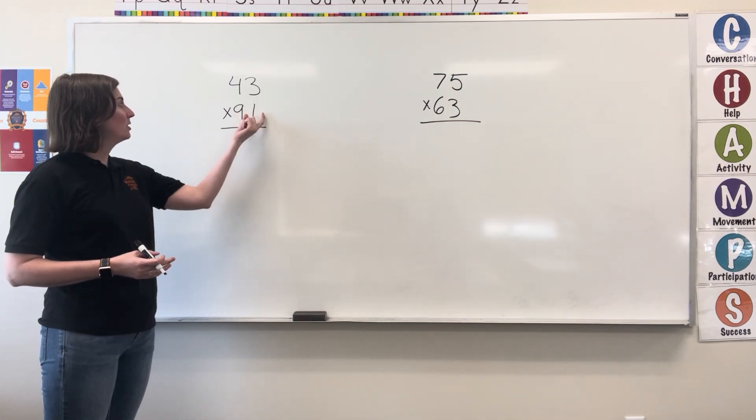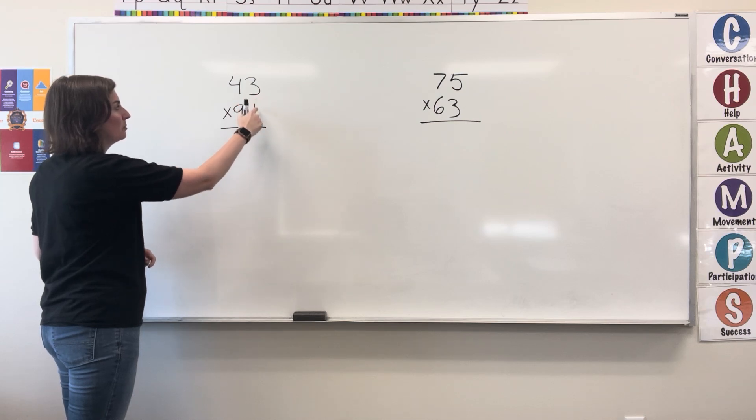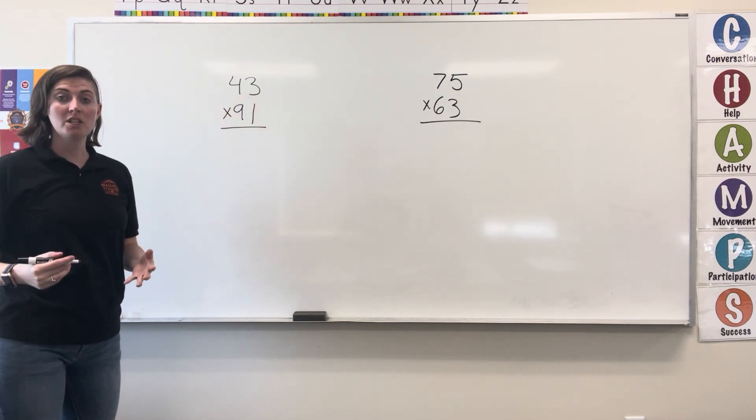First, we're going to start in the ones column and multiply the digit on the bottom to both digits on top. Let's start with that.